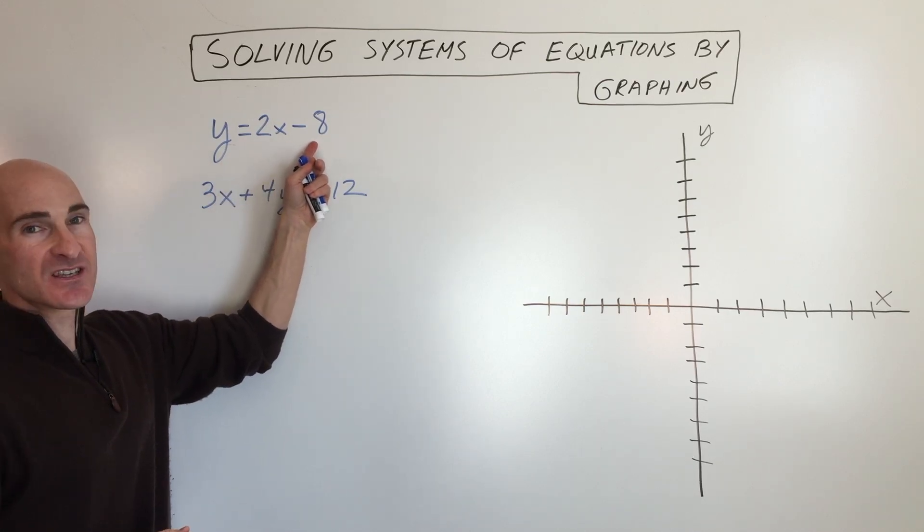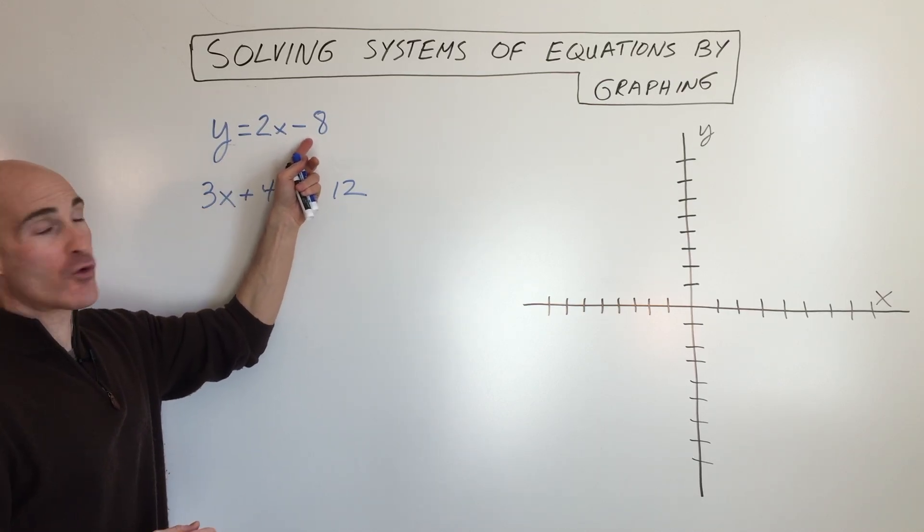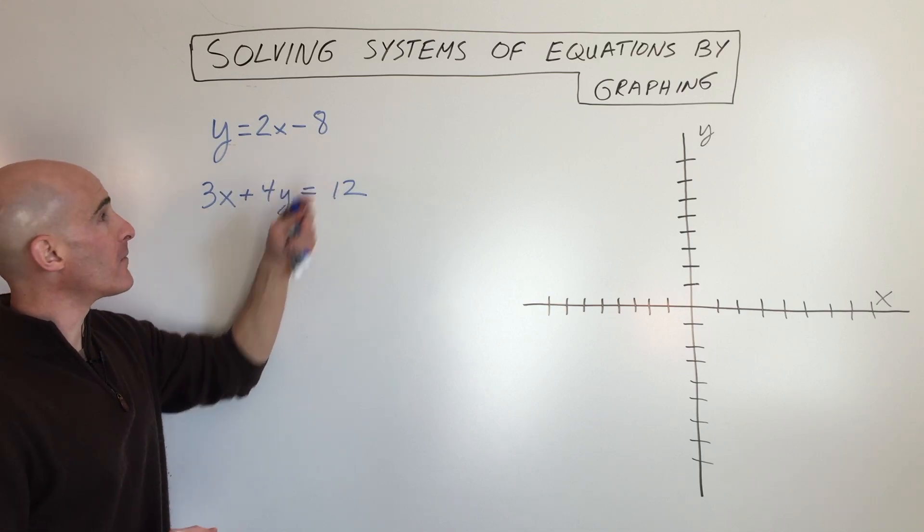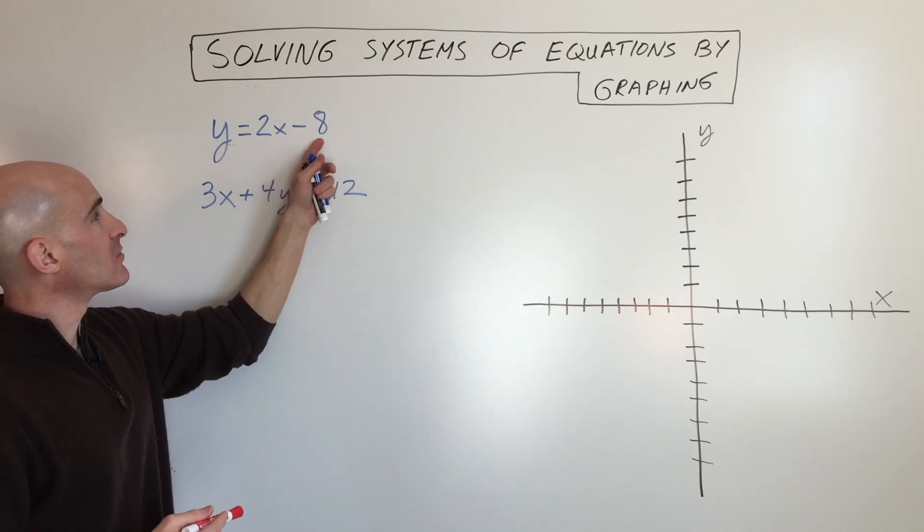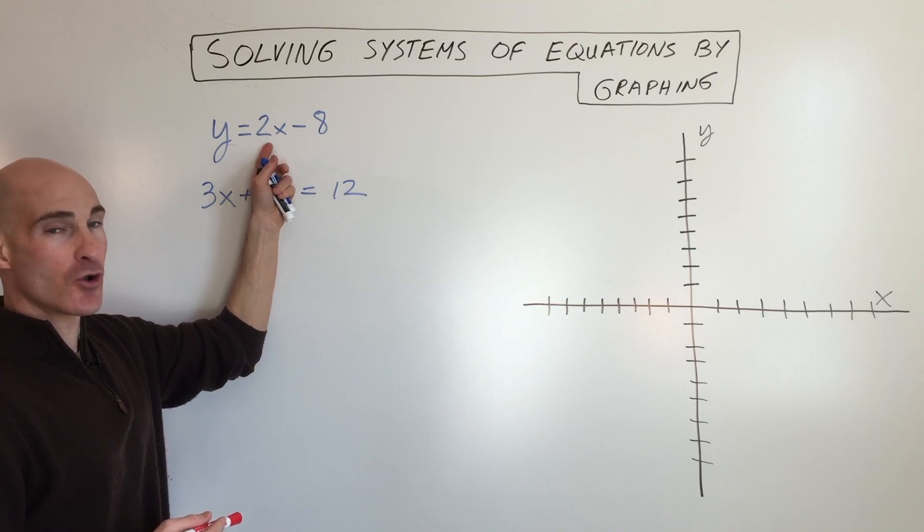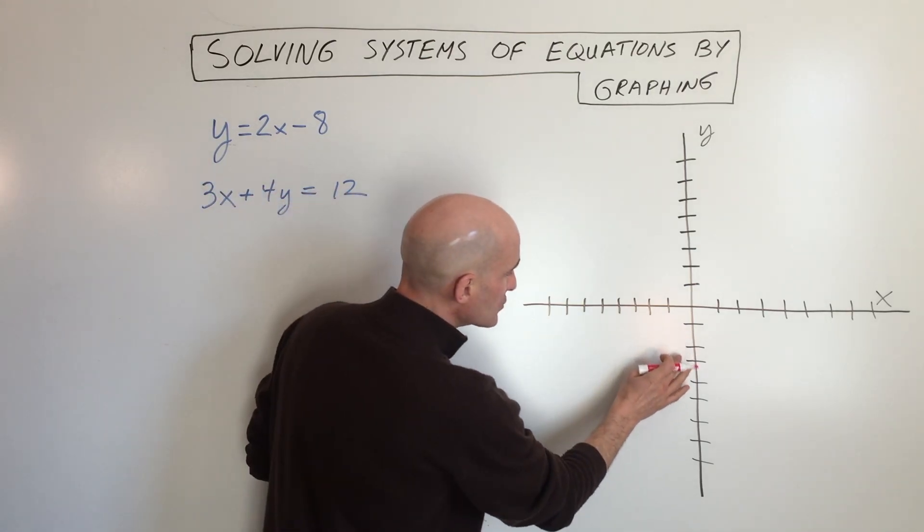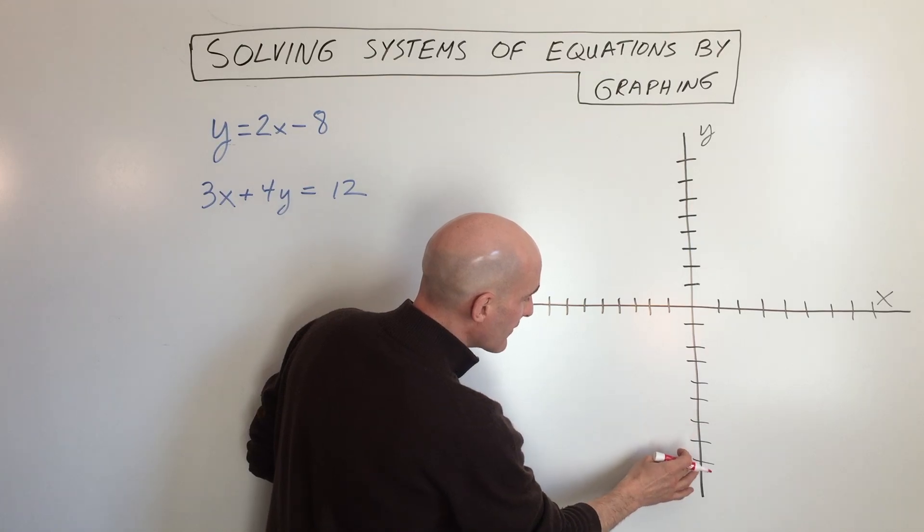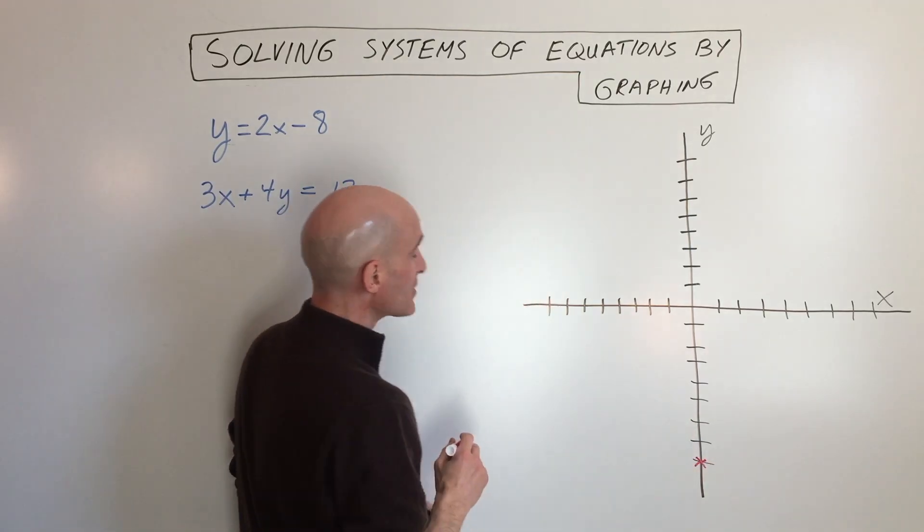This equation is already in the slope-intercept form, the y equals mx plus b form. So all we have to do is graph the y-intercept and the slope. Let's do that over here. The y-intercept is at negative eight, so it crosses right there.